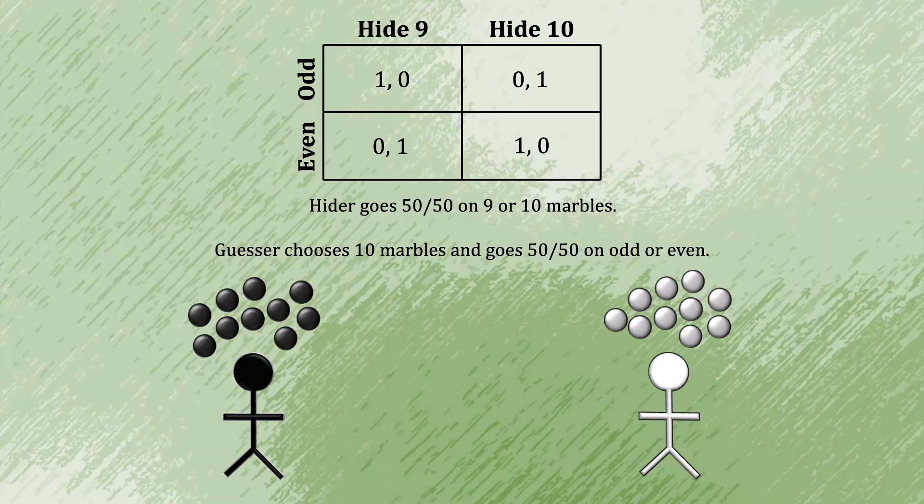Given that, each player is equally likely to win as they are to lose. So even though the game is asymmetric, where one player is starting as the guesser and the other player is starting as the hider, it turns out that each is equally likely to win when they are playing strategically optimally.